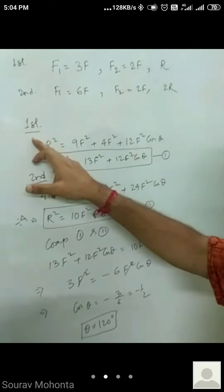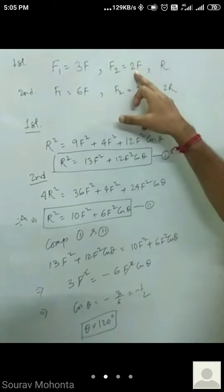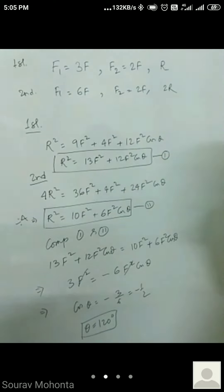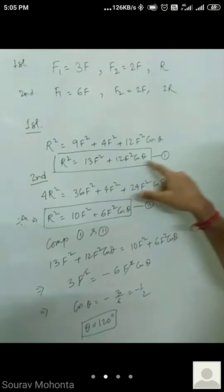In the first case, the resultant R squared. That is 3F square, 9F square, 2F whole square, that is 4F square and 2AB, that is 2 into 3 into 2, that is 12F square cos theta. So, 9F plus 4F square, 13F square plus 12F square cos theta.